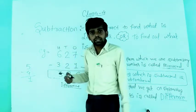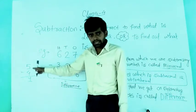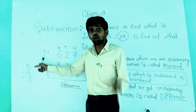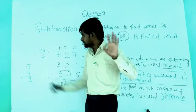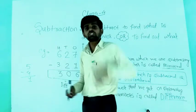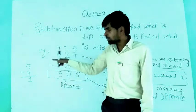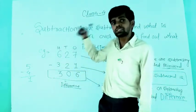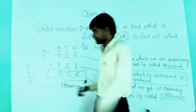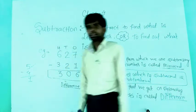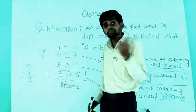From which number are we subtracting? We are subtracting from 5. So 5 is the number from which we are subtracting. The specific name for the number from which we subtract — the biggest number — is called the minuend. So 5 is the minuend.